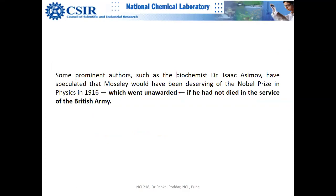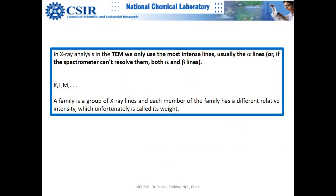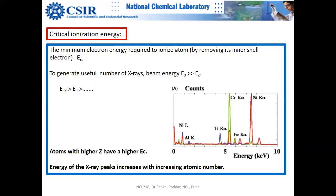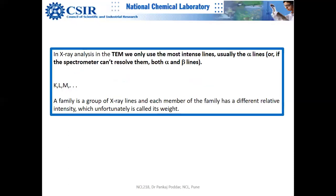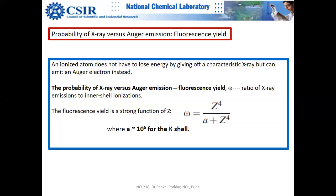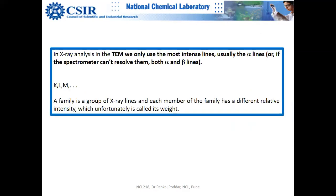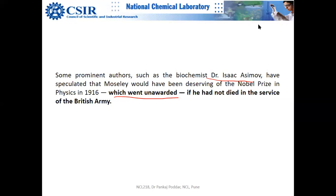In 1916, the Nobel Prize went unawarded. Isaac Asimov mentioned that if Moseley had not died, he would have gotten the Nobel Prize. With this, the professor stops the lecture and says he will continue this new and very interesting topic — spending more time on it on Monday. Students are invited to ask questions.